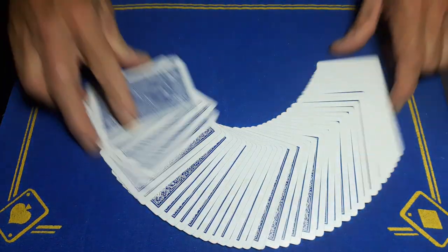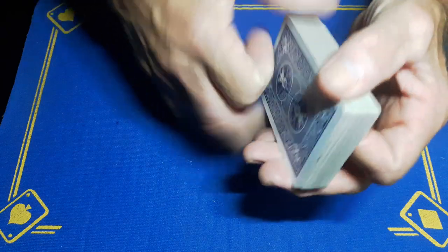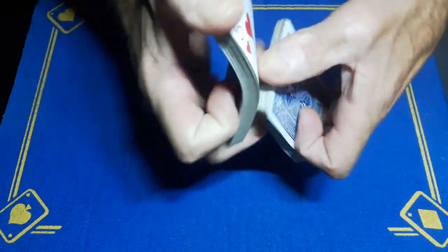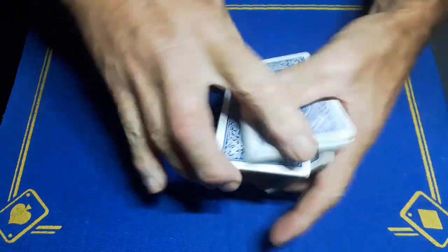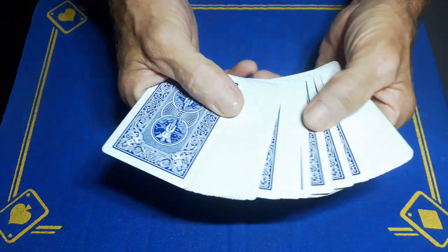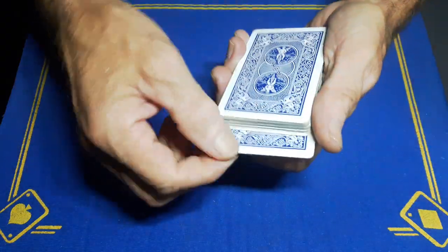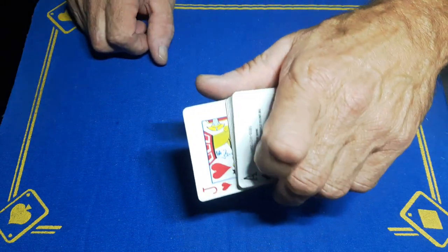Right guys, Gaff is back with the explanation to the impromptu any card at any number. So it can be a borrowed shuffled deck. The spectator is going to touch a card, remember this card for me, show them, don't